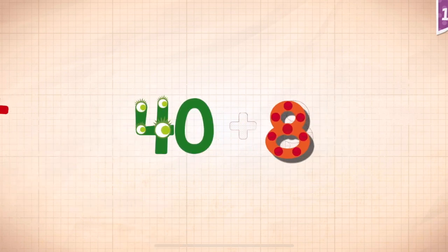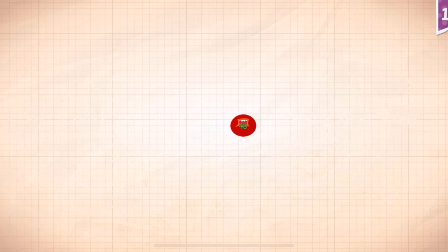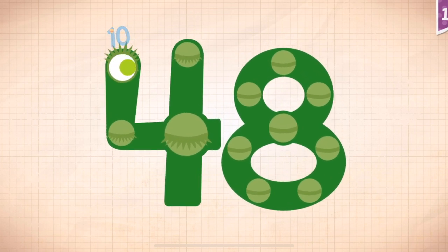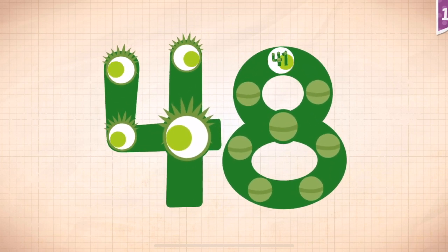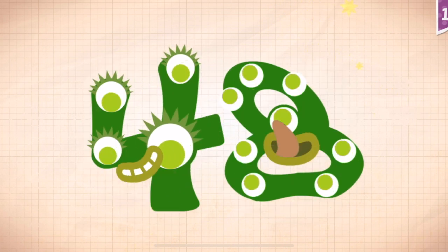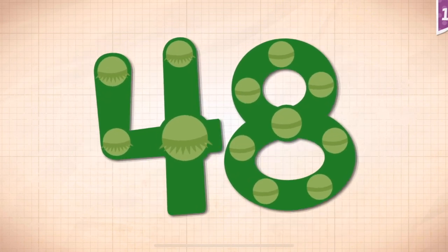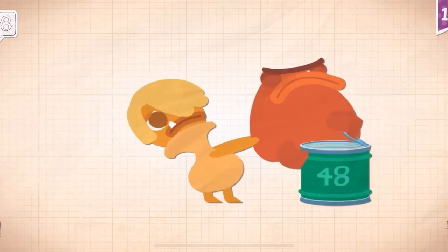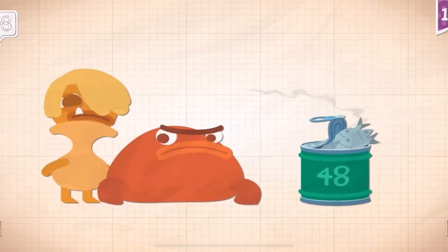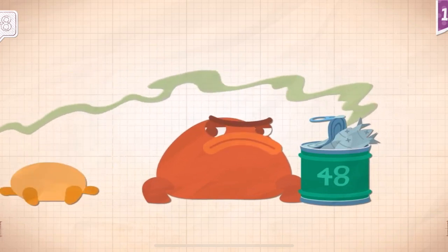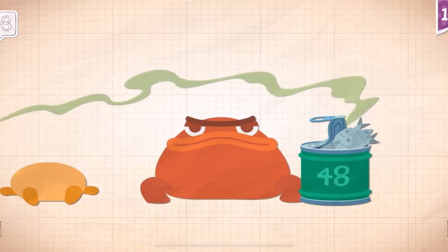40 plus 8 equals 48. Touch the monster's eyes to wake up. 10, 20, 30, 40, 41, 42, 43, 44, 45, 46, 47, 48. Grumpkin loves the big cans that have 48 sardines.